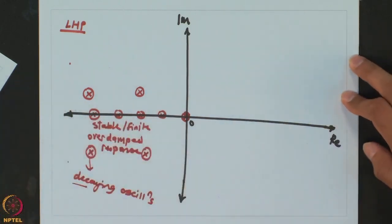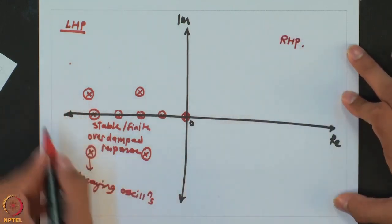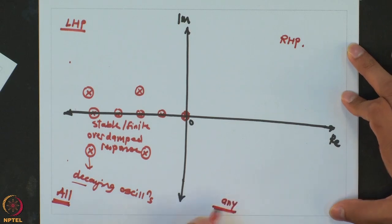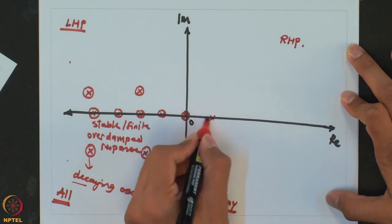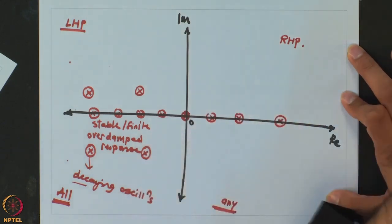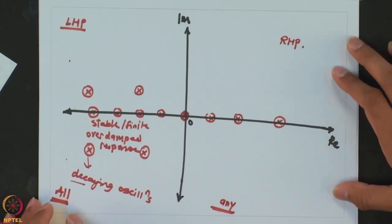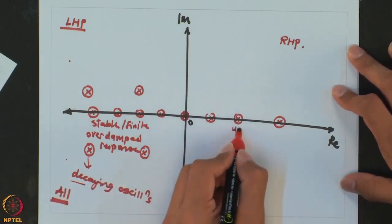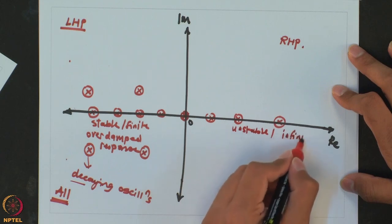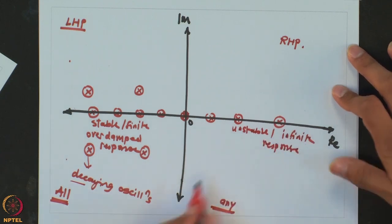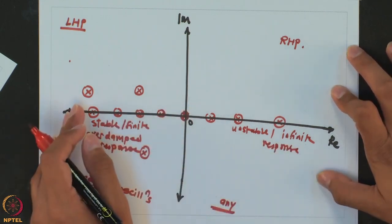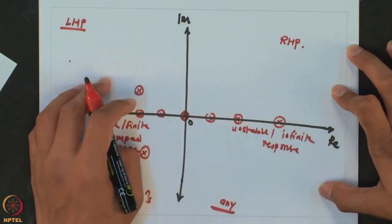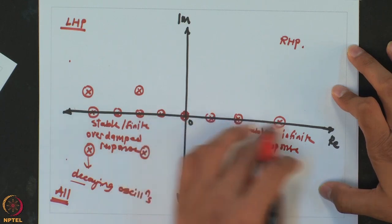The exactly opposite case is the right half plane. If any pole is on the right half plane on the real axis, it will be E raised to a positive number times T, so the response grows in time and becomes infinite as time goes to infinity. Even though n minus 1 poles are on the left half plane, a single pole on the right half plane gives you an unstable or infinite response, because all left-half-plane terms die down to zero.